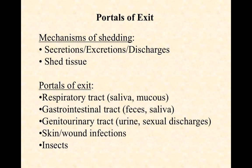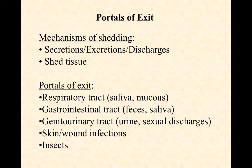Let's finish our discussion of microbial virulence by looking at portals of exit and modes of transmission. The key to remember with portals of exit is that the way a microbe gets out of a human host typically mimics the way it got in. So a respiratory tract pathogen that got in through respiratory epithelial secretions will get out the same way — same for GI tract, genitourinary tract, skin wound infections, and insect vectors.